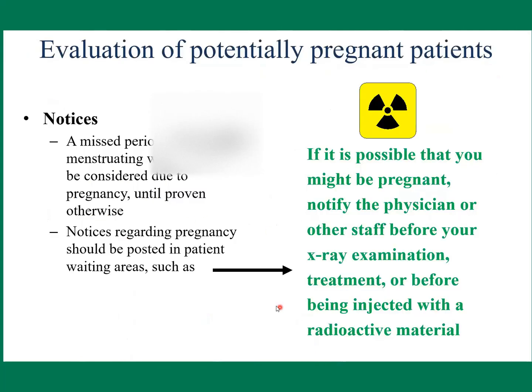The evaluation of potentially pregnant patients: a noticed missed period or irregular menstrual cycle should be considered as a possible pregnancy until proven otherwise. Notices regarding pregnancy should be posted in patient waiting areas. If you might be pregnant, notify the physician or other staff before examination or treatment.